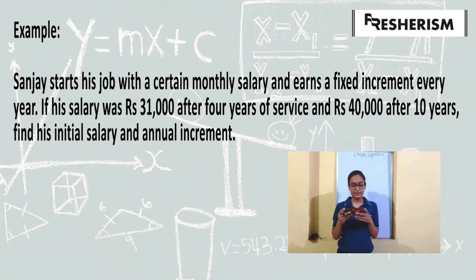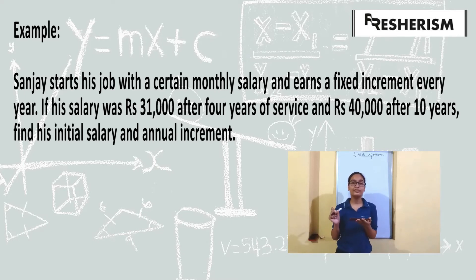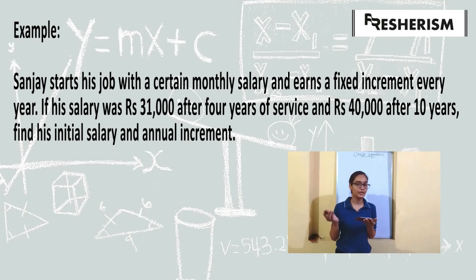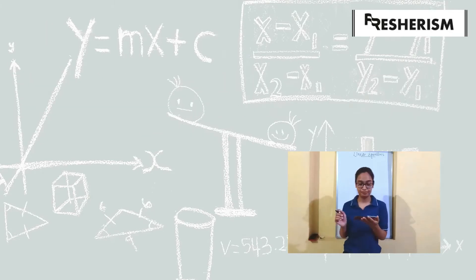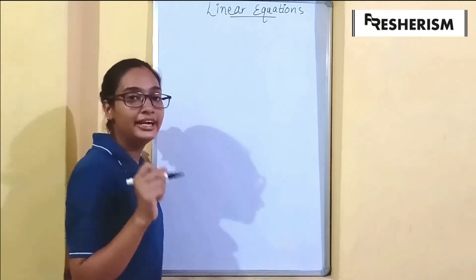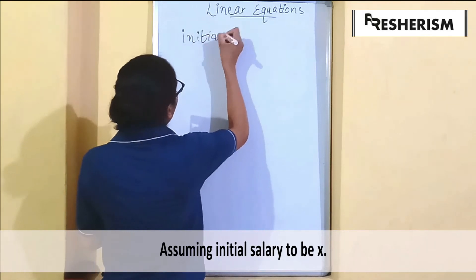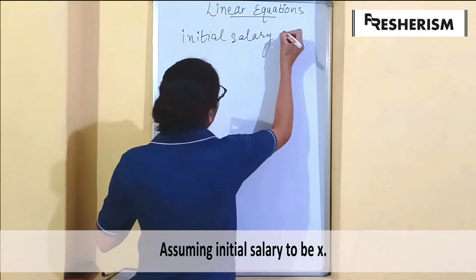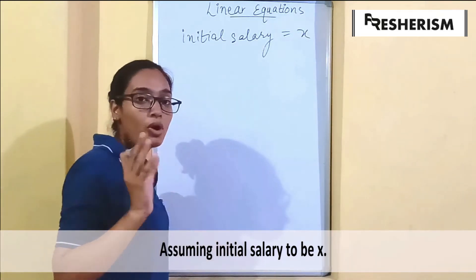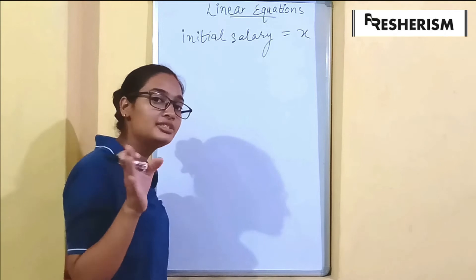Now let us do another question. Sanjay starts his job with a certain monthly salary and earns a fixed increment every year. His salary was rupees 31,000 after 4 years of service and rupees 40,000 after 10 years. Find his initial salary and annual increment. Let us say his initial salary is x.